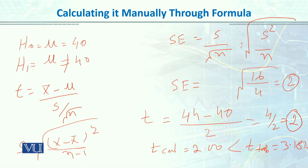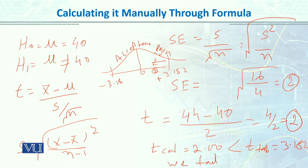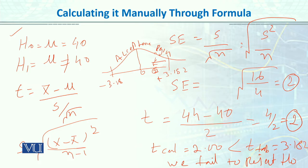Our calculated value of 2 is smaller than the table value of 3.182. Recalling hypothesis testing: in the two-tail test, the critical value is ±3.182. Our calculated value of 2 falls in the acceptance region for the null hypothesis, so we fail to reject the null hypothesis. Because our calculated value is smaller than the table value, we fail to reject the null hypothesis, meaning mu equals 40 — there is no significant effect of the treatment. Even though the mean changed to 44, based on the sample of 4, this is not sufficient to conclude a significant treatment effect.